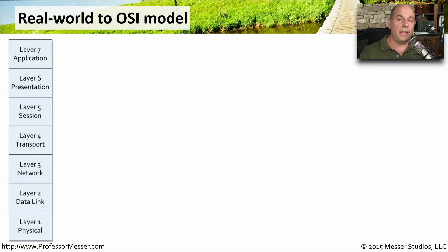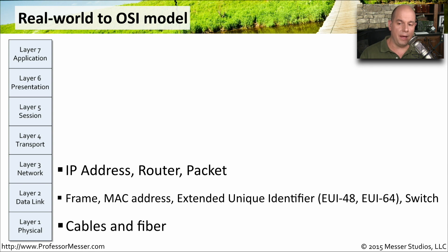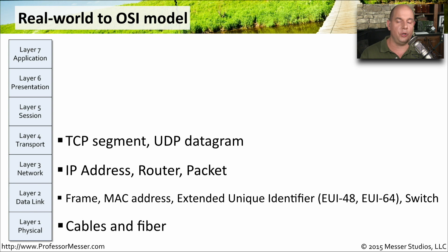To summarize how we view the OSI model in the real world: at layer 1, we're talking about cables and fiber — how we get signal from one side to the other. At layer 2, we're referring to frames with MAC addresses, sometimes called extended unique identifier addresses like EUI-48 or EUI-64; switches make forwarding decisions based on this layer 2 address. At OSI layer 3, we're talking about IP addresses and routers — we refer to this information as packets. Layer 4 is where our TCP and UDP port numbers are, covering segmentation with TCP and datagram information with UDP.